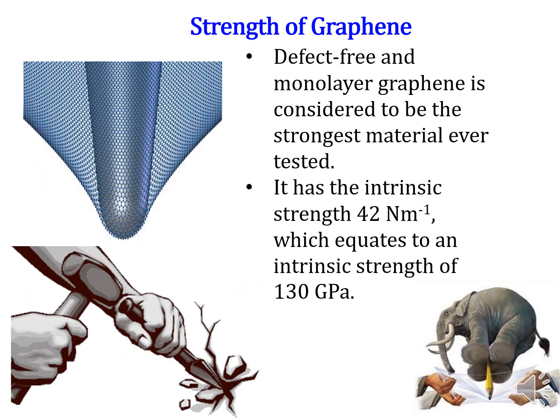Another amazing fact of graphene is its strength. Defect-free monolayer graphene is considered to be the strongest material ever tested. Graphene has an intrinsic strength of 42 N/m, which equates to an intrinsic strength of 130 GPa. According to experiments done by researchers at Columbia University, graphene is the strongest material in the world. The secret to its extraordinary strength lies in the strangeness of the covalent bonds between carbon atoms.